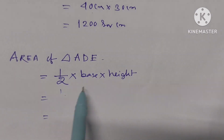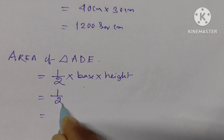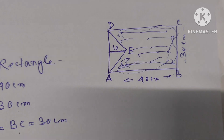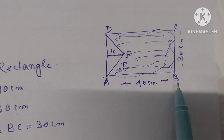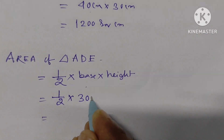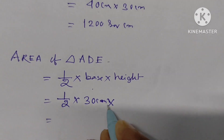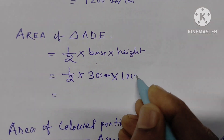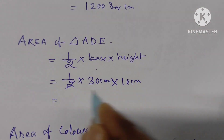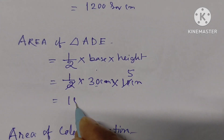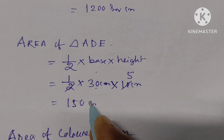Area of triangle AD = half into base into height. We know that BC equals AD because in a rectangle opposite sides are equal. If BC is 30, then AD is also 30 centimeters. Height is given as 10 centimeters. Dividing 10 by 2 gives 5; so 30 × 5 = 150 square centimeters.